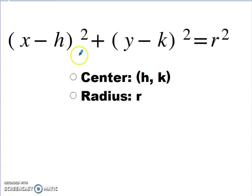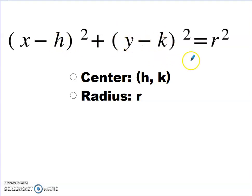Here is what the equation of a circle looks like in standard form. The center of the circle is given by the opposite of the number with the X, and similarly, the Y-coordinate of the center is the opposite of the number with the Y. Both sets of parentheses are squared. On the other side of the equation is a number — that's the radius squared — so taking the square root gives us the radius.